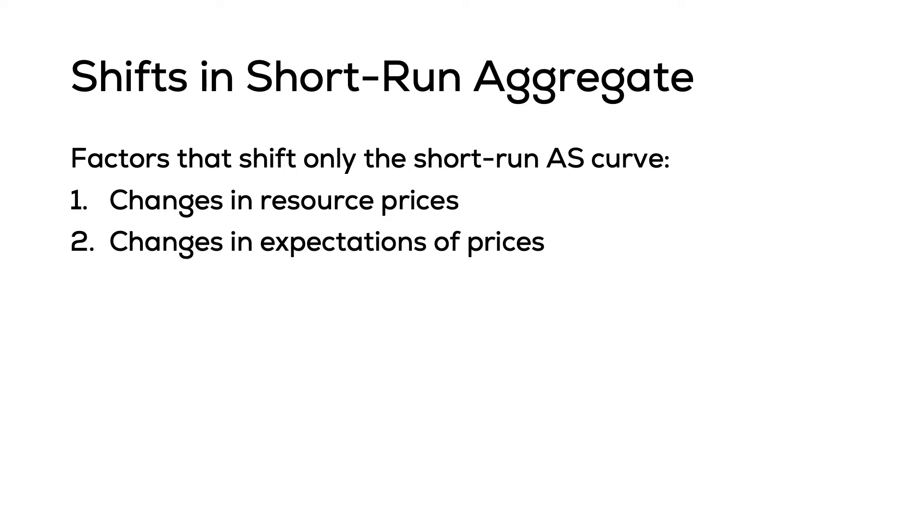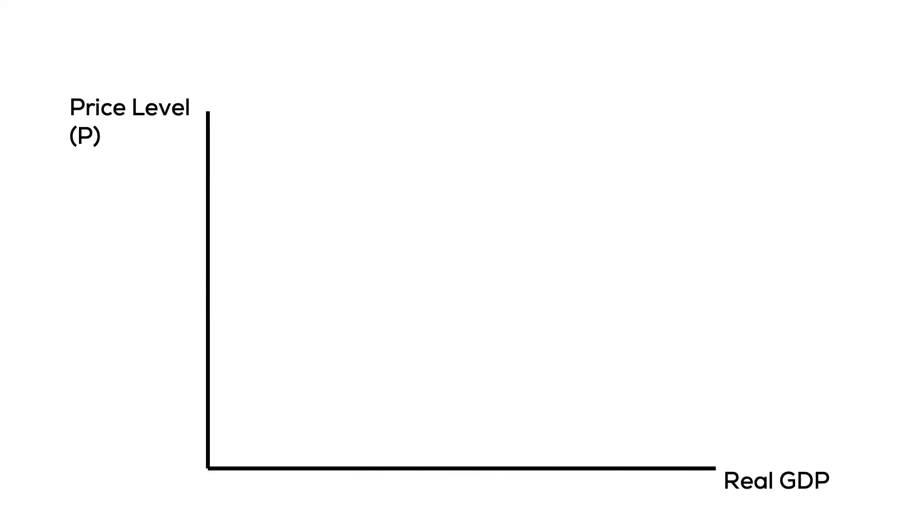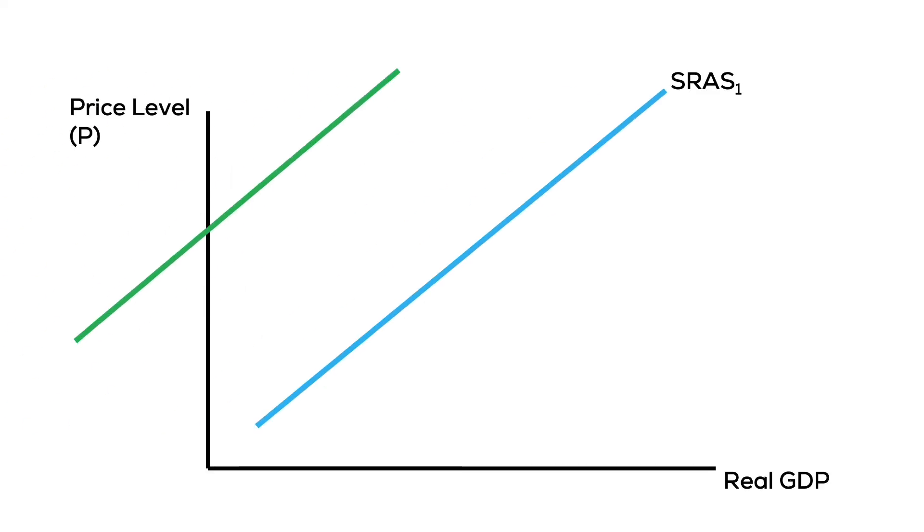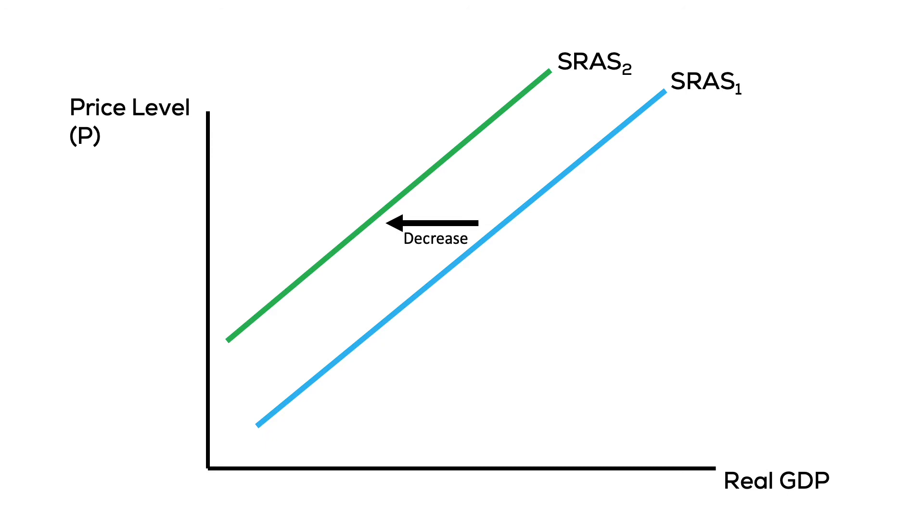The next shift factor is expectation of future price levels. If workers and firms expect higher prices in the future, they will start to negotiate for higher wages today, and that causes a reduction in the short-run aggregate supply curve as production becomes more costly. Expecting higher future prices causes a shift today — the short-run aggregate supply curve is going to shift to the left to reflect the higher cost.